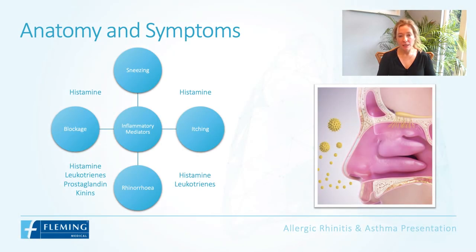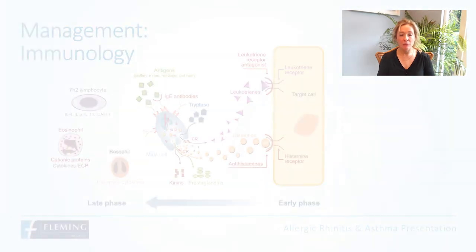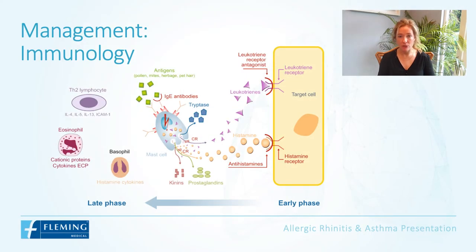Histamine can cause sneezing and itching, and has some impact on rhinorrhoea and nasal blockage, whereas leukotrienes have more impact on rhinorrhoea and nasal blockage. Prostaglandins and kinins contribute more to nasal blockage rather than rhinorrhoea. The drugs we use to treat allergic rhinitis therefore include antihistamines, anti-leukotriene receptor agents, and mast cell stabilisers.